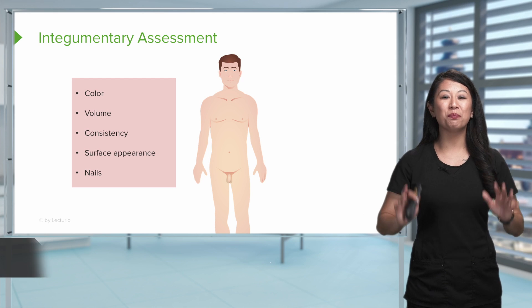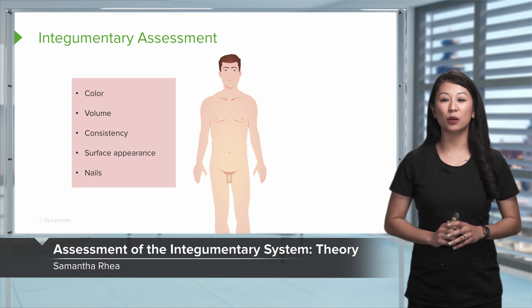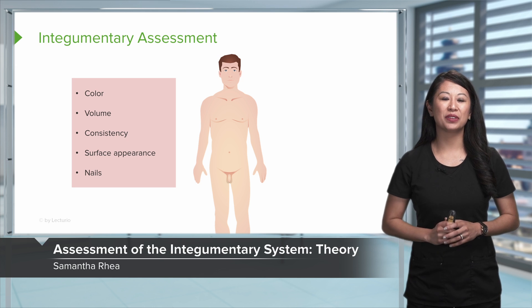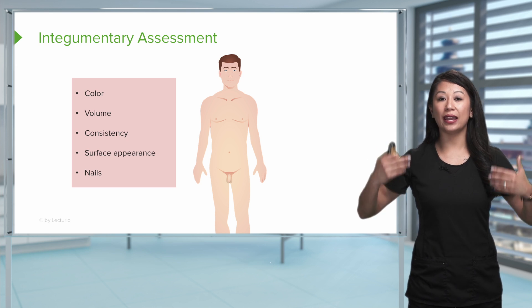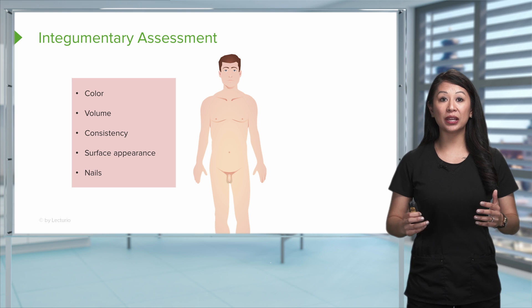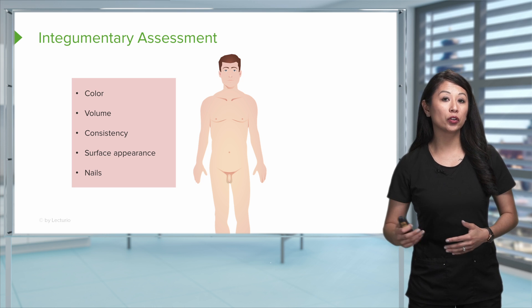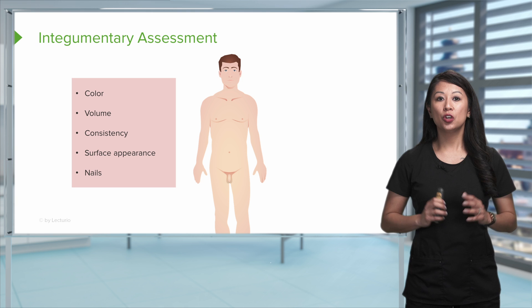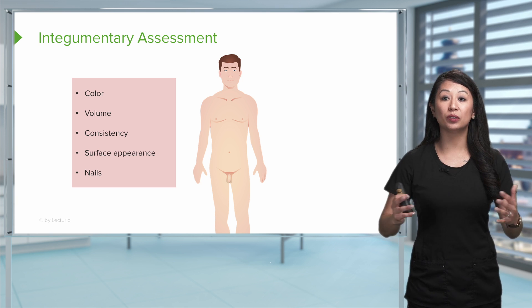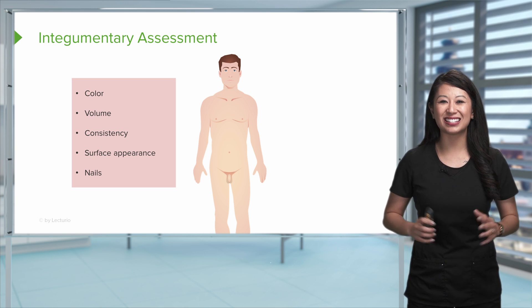Now let's move on to one of the biggest organs of the patient's body, which is our integumentary system. As we move through our head-to-toe assessment, we're going to be looking at color, volume, consistency of the patient's skin, surface appearance, and even include the nails, because believe it or not, that can tell us a lot.